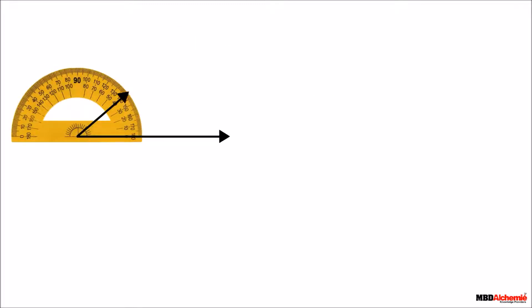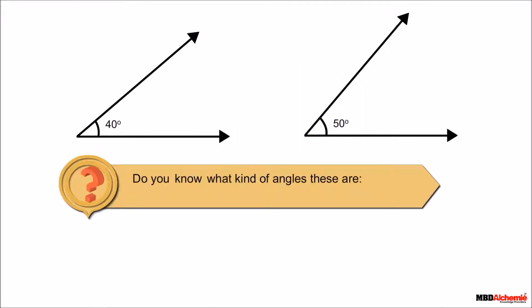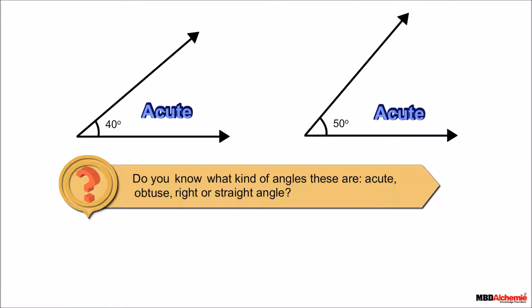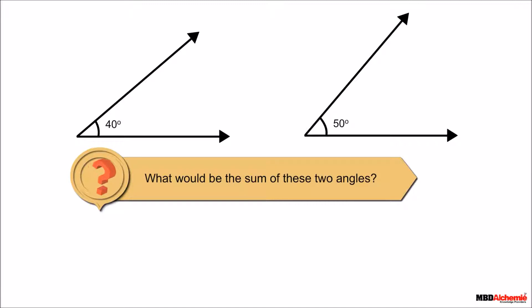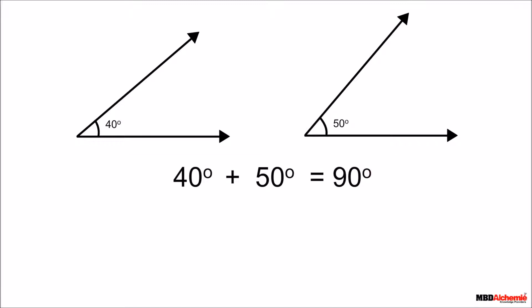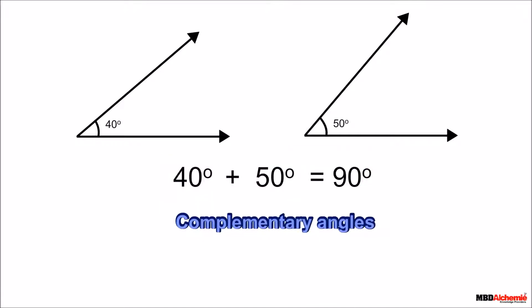Let's draw two angles that measure 40 degrees and 50 degrees. Both of these angles are acute. The sum of the given angles is 90 degrees. If the sum of the measure of two angles is 90 degrees, then the angles are called complementary angles.